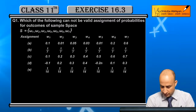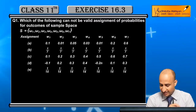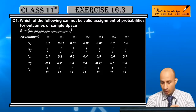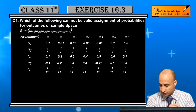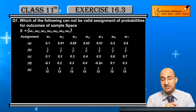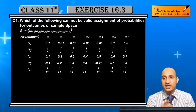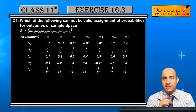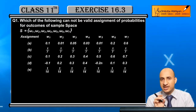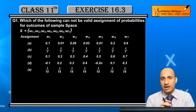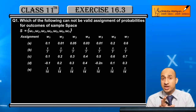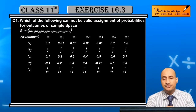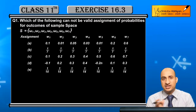Now see, which of the following can be the valid assignment of probabilities for the outcome of sample space S = {ω1, ω2, ω3}? You can see this question has 5 parts, and here we have an assignment for each part.